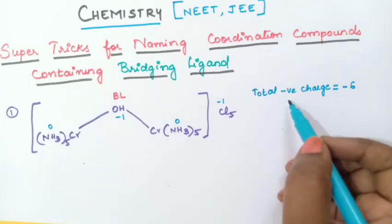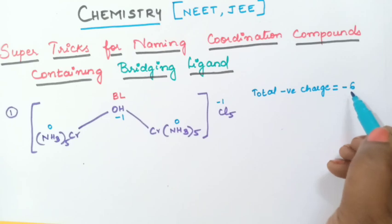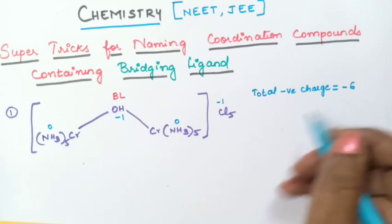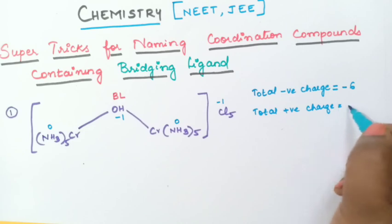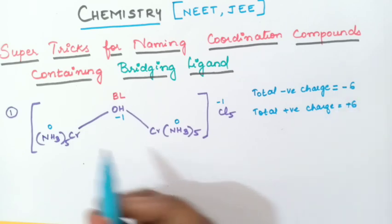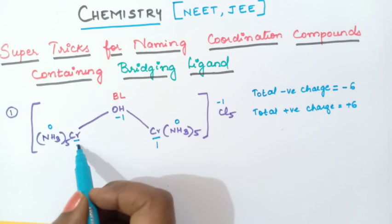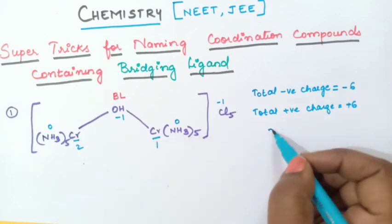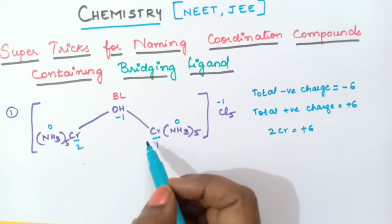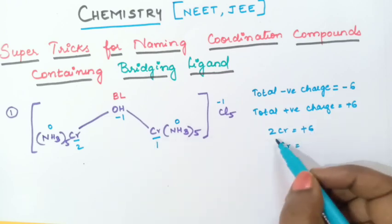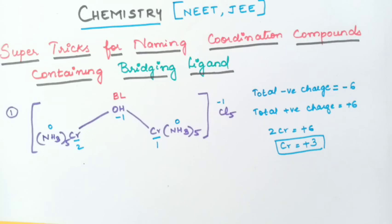The total negative charge equals the total positive charge in the coordination compound. So total positive charge is +6. Now see how many chromium atoms are present — there are 2. So 2 Cr = +6, meaning 1 chromium = 6 ÷ 2 = 3. Therefore the oxidation state of chromium is +3.